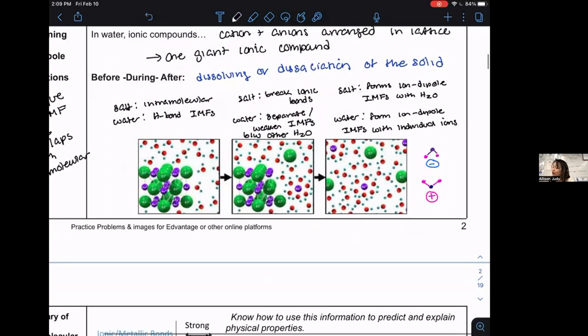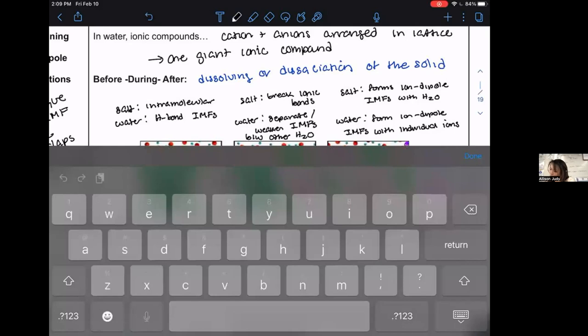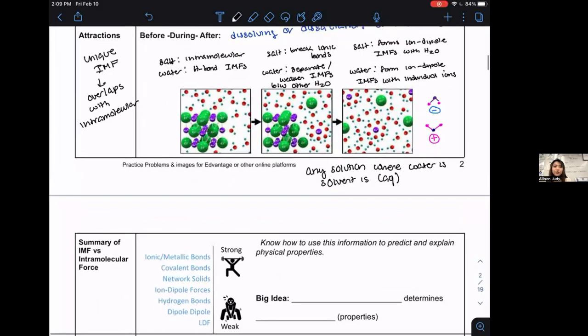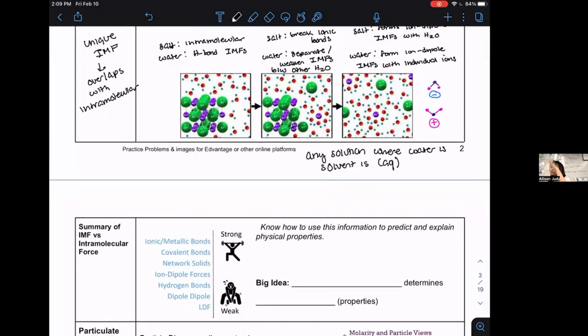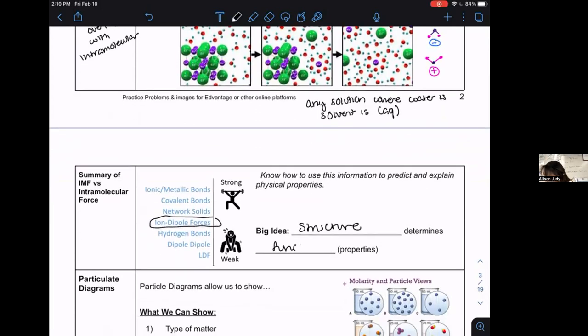Something you should note is we call any solution where water is solvent aqueous, and we put this symbol. So you'll often find that ionic compounds are like CUSO4 aqueous tells me that we've dissolved an ionic compound in water. We've separated its ions floating in a water solution. You should be able to use and relatively rank the strength of intra versus inter. And of course, these ion dipole forces are the weird bridge between. Big idea, structure determines function.